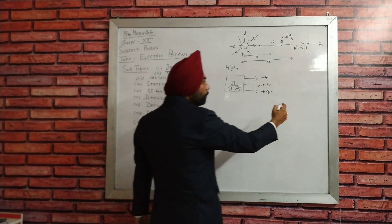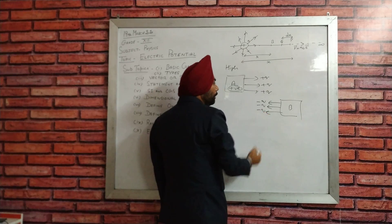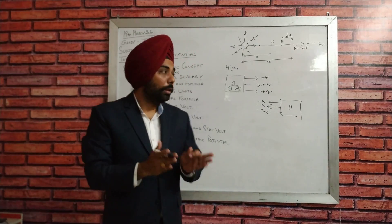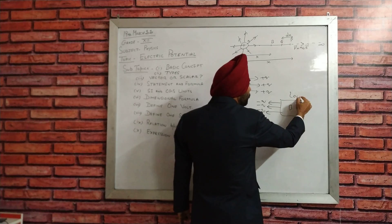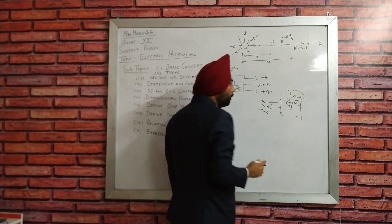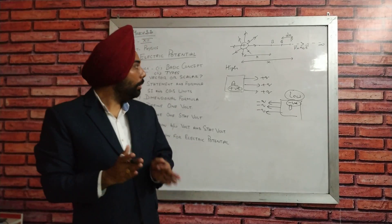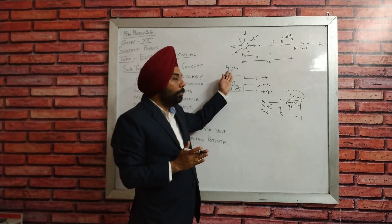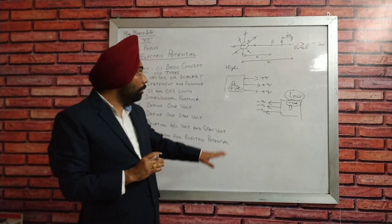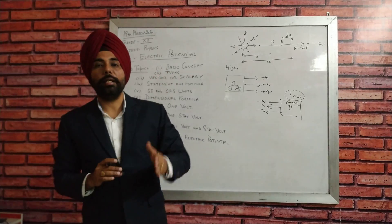Similarly, if anybody — suppose body B — is giving negative charge, if anybody is emitting negative charge, which means that body is at low potential, or in physics you can also say it is at negative potential. So electric potential determines in which direction the charge will flow. There are two types of potential: high and low, or in physics, positive and negative potential.